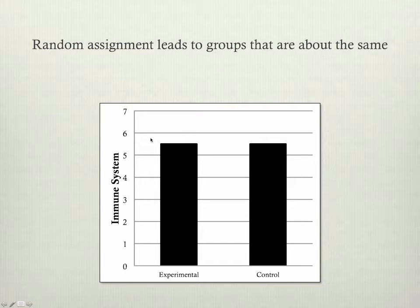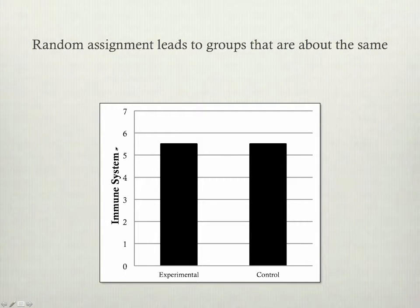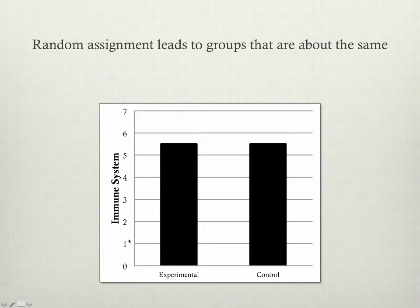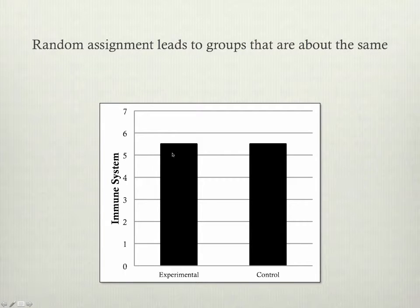So even if the level to which they're sick is the same at the beginning of the experiment, if the people in the experimental group have a really healthy immune system, that's going to cause a problem. This is a confounding variable again — we don't know if they get less sick because of their immune system or because of the treatment.